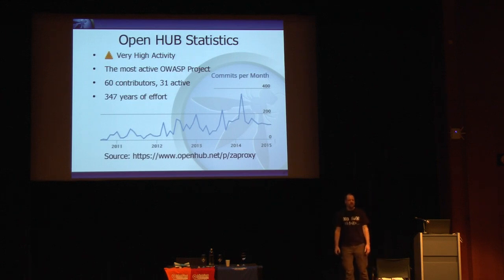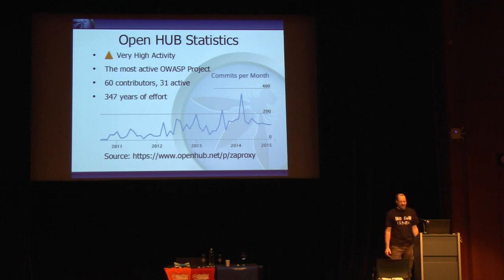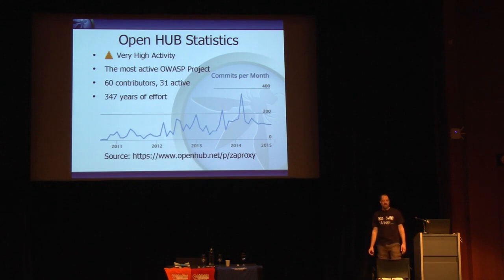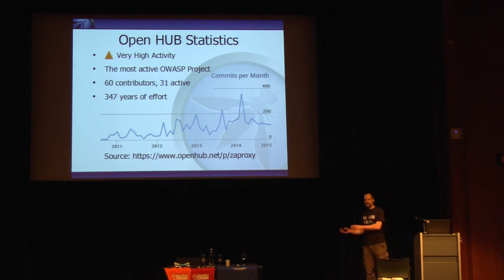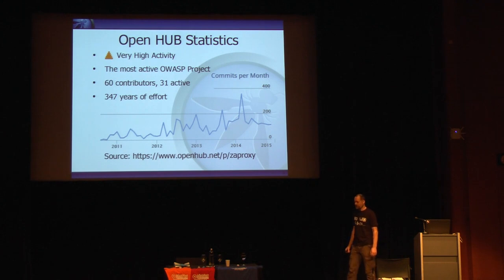On the site Open Hub, ZAP is counted as very high activity — right up there with the Linux kernel and Firefox. It is the most active OWASP project on there. We've had 60 code contributors, 30 of whom are active, and with translators and evangelists we've got over 200 contributors. Apparently it took 347 years of effort — I'm not quite sure how they calculate that.